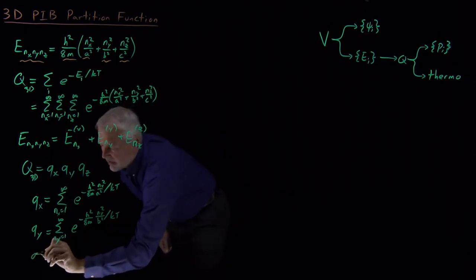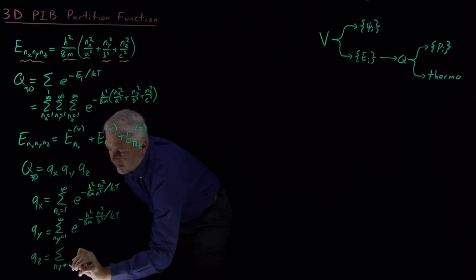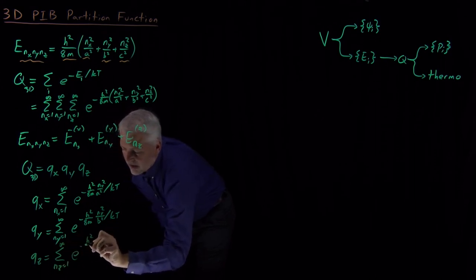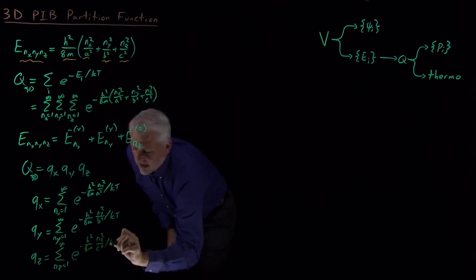And lastly, there's a term for qz. Summing from one to infinity of e to the minus h squared over 8m, n z squared over c squared, all divided by kt.